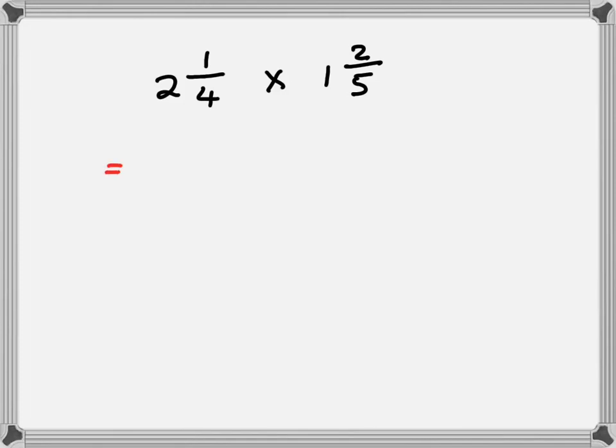You're back. Let's first convert these into improper fractions. 4 times 2 is 8 plus 1 is 9. 5 plus 2 is 7.